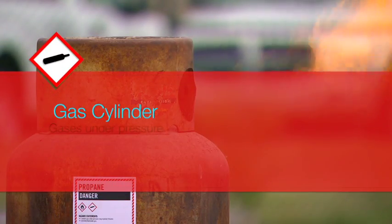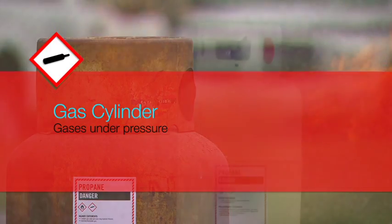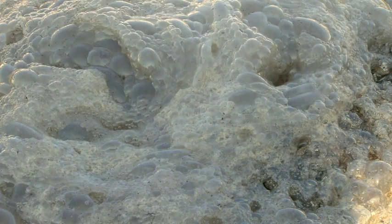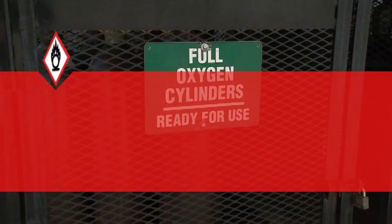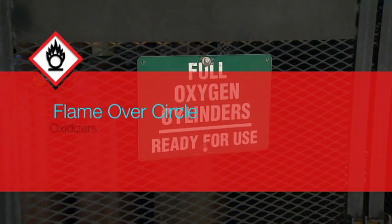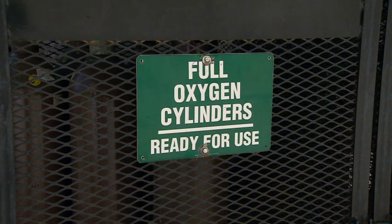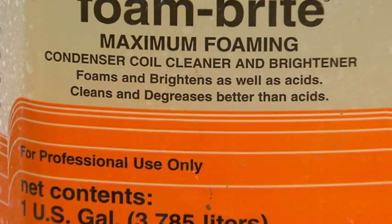The gas cylinder pictogram warns you about gases that are under pressure, which can explode or propel the cylinder if it's heated, ruptured, or leaking. One common example is a propane cylinder. The corrosion pictogram covers chemicals that can seriously damage skin and eyes — one example would be sulfuric acid, battery acid. The exploding bomb pictogram addresses chemicals that can blow up, like explosives, self-reactives, and organic peroxides. The flame over circle pictogram warns you about oxidizers, chemicals that cause other materials to catch fire or explode — one example is oxygen. The final pictogram is the skull and crossbones, which identifies chemicals with acute toxicity that could be fatal or toxic, like condenser coil cleaner.